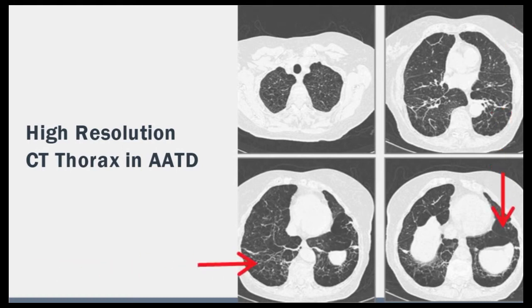It is important to recognize alpha-1 antitrypsin deficiency, as patients with the ZZ phenotype may benefit from replacement therapy. This entails plasma-purified alpha-1 antitrypsin replacement, which has been shown to slow the loss of lung tissue in these individuals.